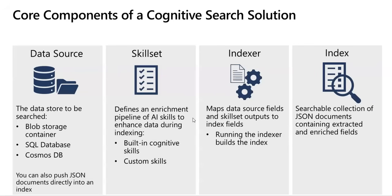Examples of the kind of information that can be extracted by an AI skill include: the language in which a document is written; key phrases that might help determine the main themes or topics discussed in a document; a sentiment value that quantifies how positive or negative a document is; or the specific locations, people, organizations, or landmarks mentioned in the content. AI-generated descriptions of images or image text extracted by optical character recognition can also be extracted. Custom skills that you develop to meet a specific requirement can be extracted as well.